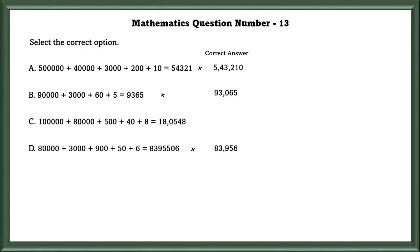If we calculate the C option, 10,000 plus 8,000 plus 500 plus 40 plus 8, we will get 18,548. So our answer is C.